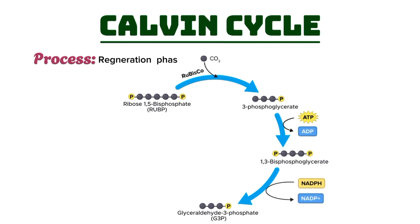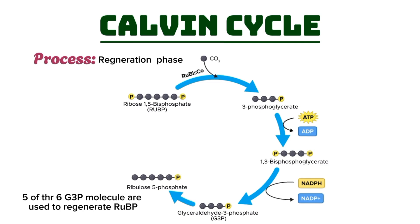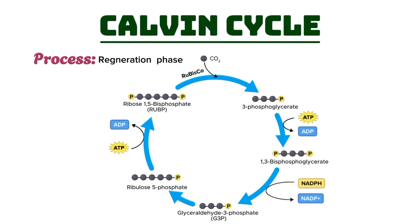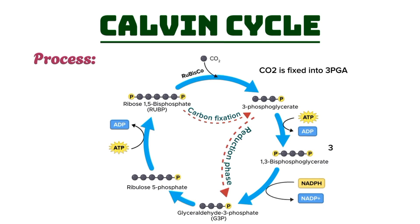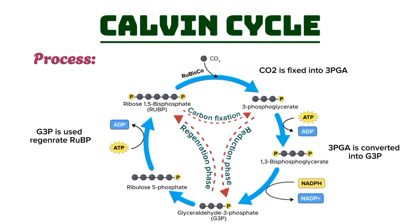Finally, we reach the regeneration phase. In this step, five of the six G3P molecules produced in the reduction phase are used to regenerate RuBP, the molecule needed to keep the cycle running. This regeneration process requires additional ATP, and it's key because without RuBP, the Calvin Cycle wouldn't be able to continue fixing carbon. To summarize: in the carbon fixation phase, CO₂ is fixed into 3-PGA; in the reduction phase, 3-PGA is converted into G3P using ATP and NADPH; and in the regeneration phase, G3P is used to regenerate RuBP, ensuring the cycle can continue and the plant can generate the glucose it needs.